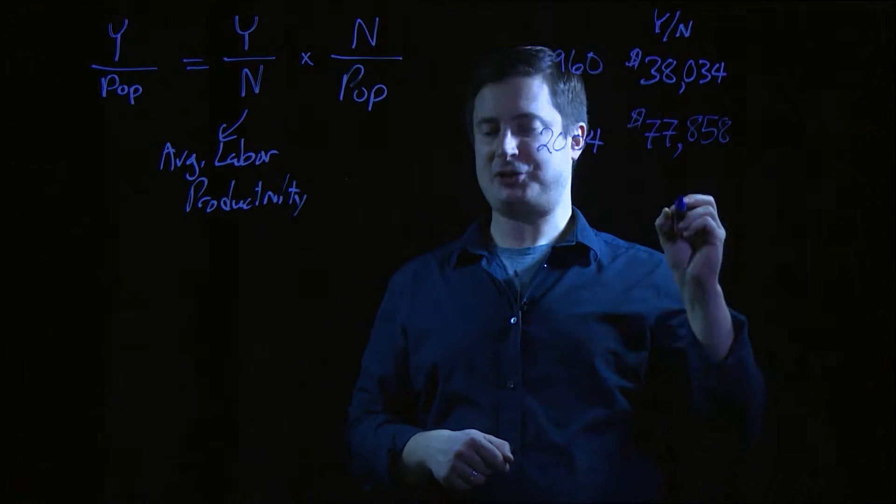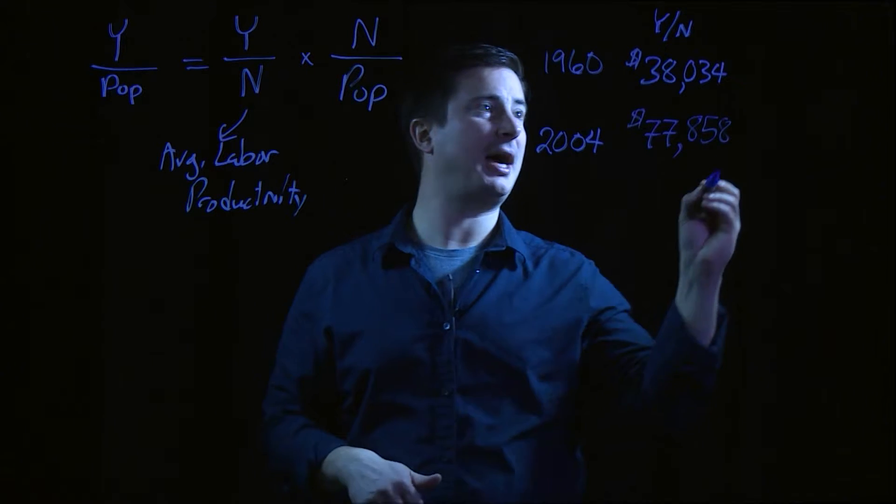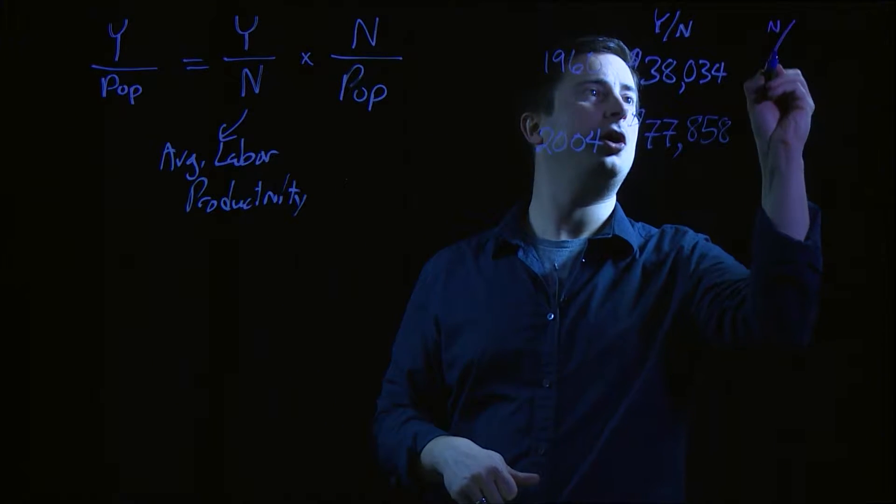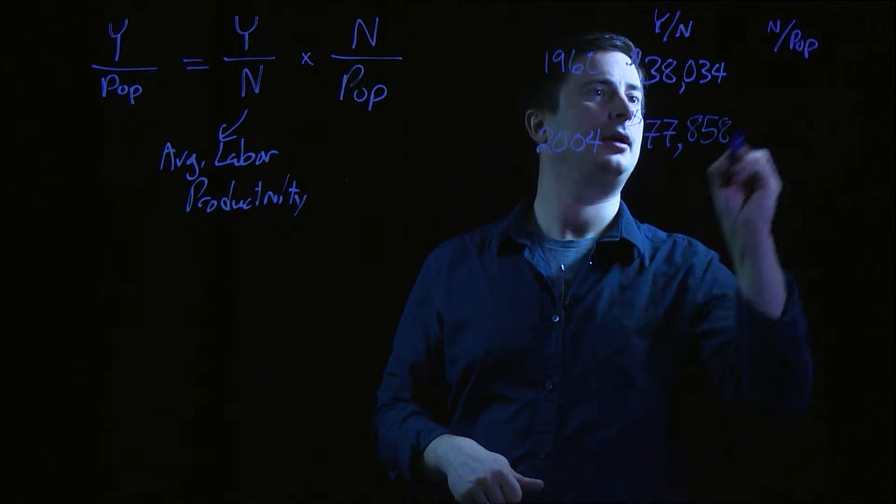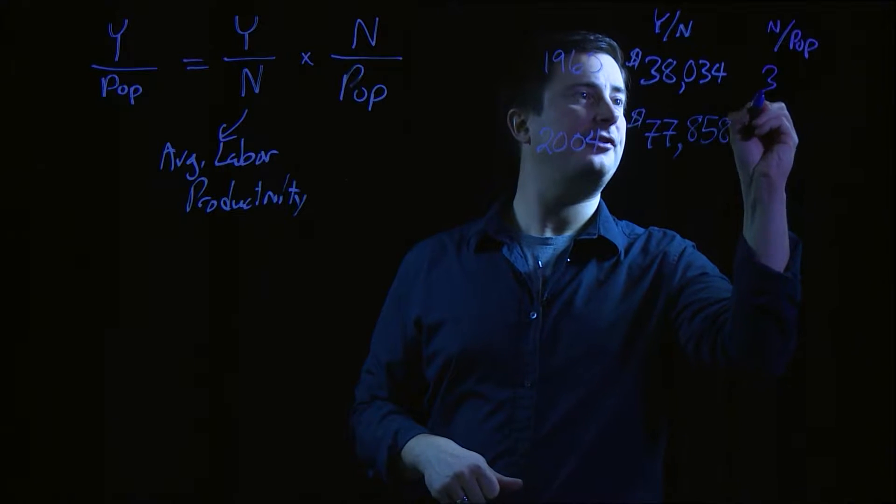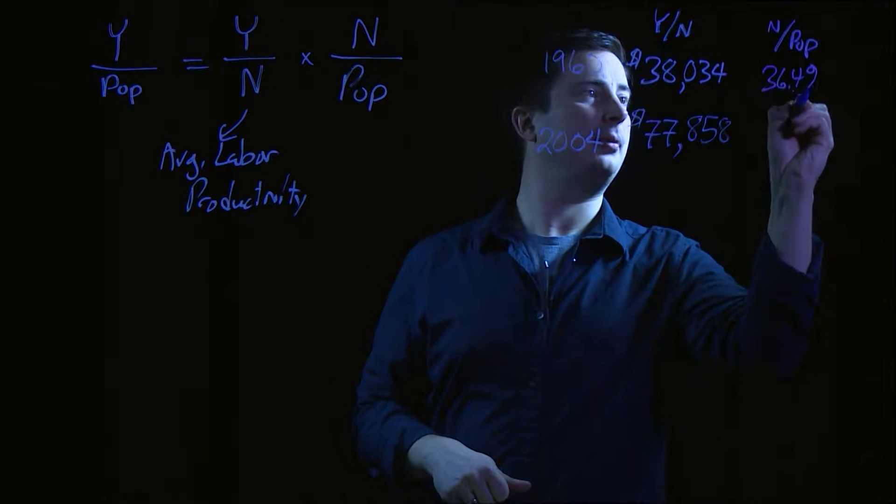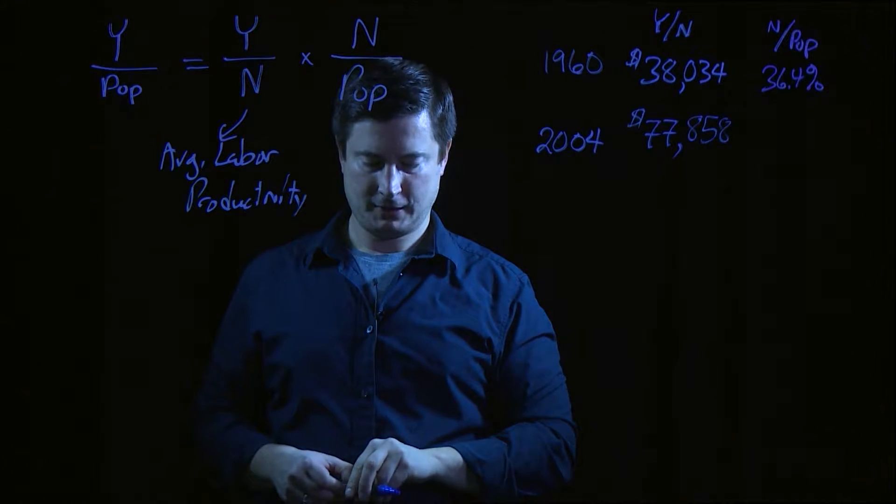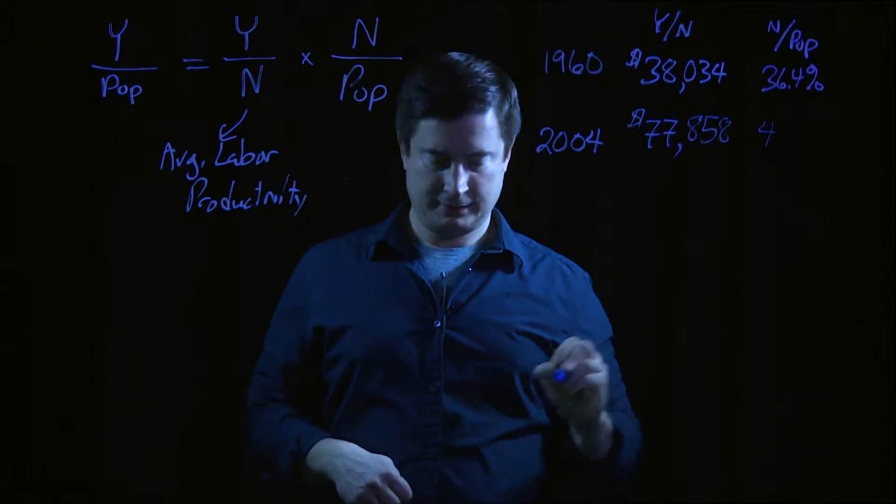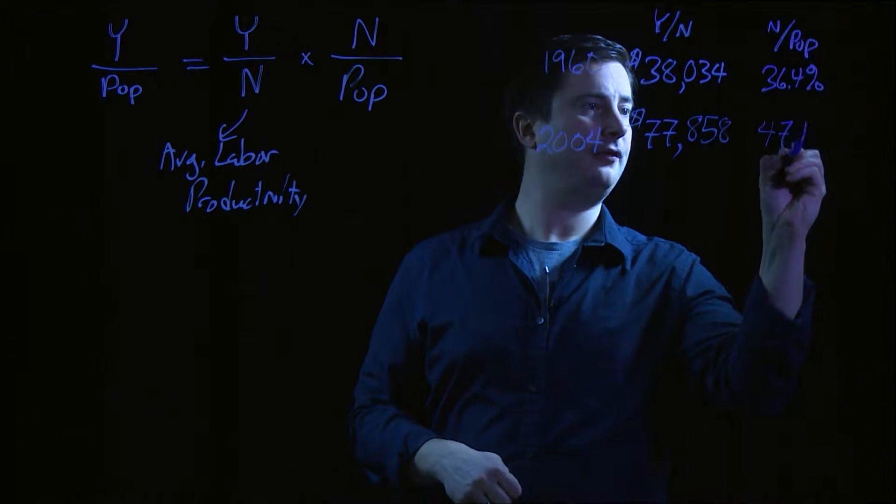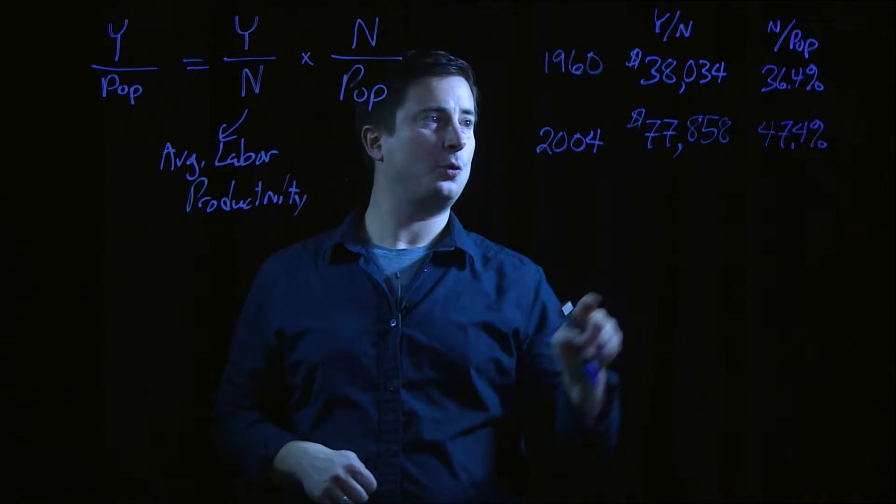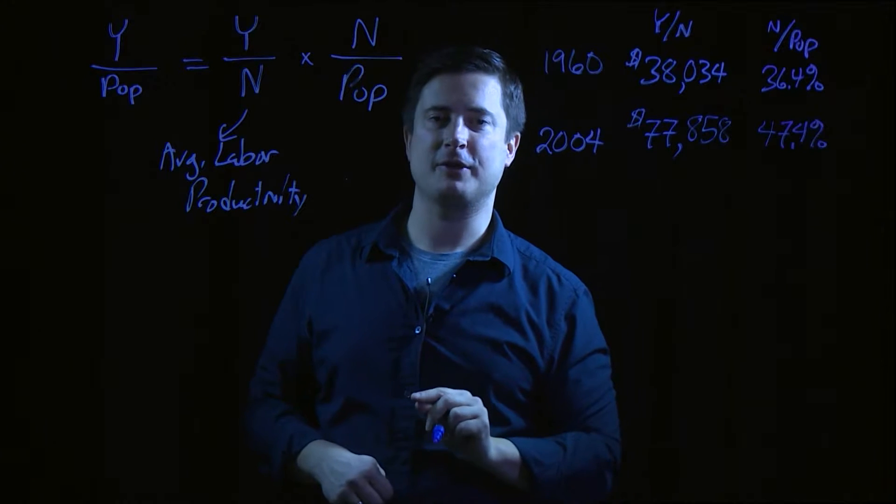Well, let's also imagine that the share of the population that's employed, or N over pop, in 1960, is 36.4%. And now imagine in 2004, it's 47.4%.